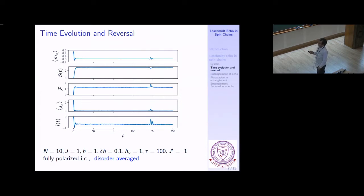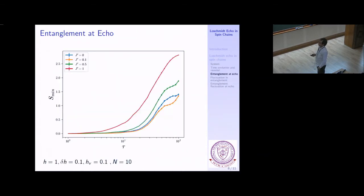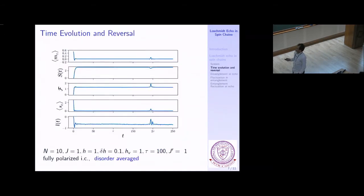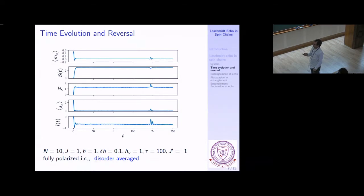Next, we systematically vary τ as well as j-prime and ask what is happening in the system. There are five different quantities we can look at during the time evolution: mean magnetization, entanglement, number fluctuation, and others. No matter which one you take, this effect is present, and three of them — number fluctuation, mean magnetization, and the echo signal — are experimentally accessible.